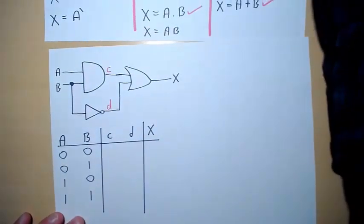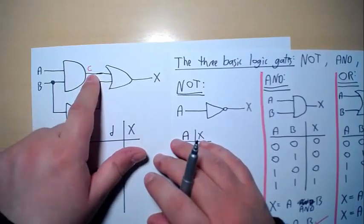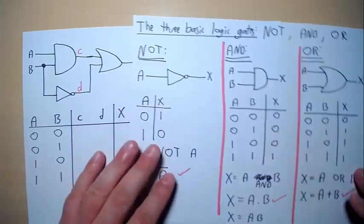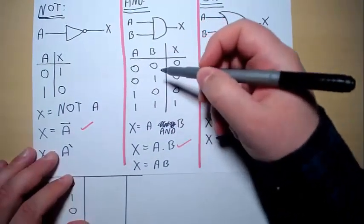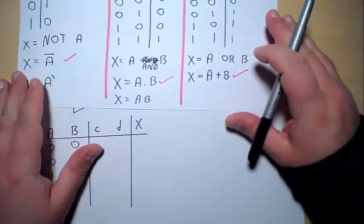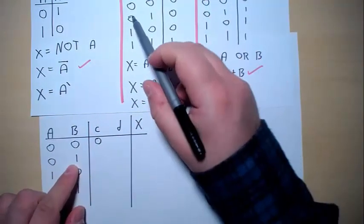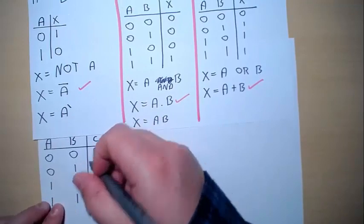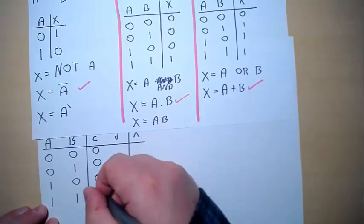And let's start by filling in column C. And we know that C is basically the AND, because this is an AND gate, of A and B. So if we look at our truth table for the AND gate, we know that when we have a 0 and a 0, the AND gate will give us a 0. When we have a 0 and a 1, the AND gate will give us a 0 as well. Where we have 1 and 0, the AND gate will give us a 0. And where we have 1 and 1, the AND gate will give us a 1.